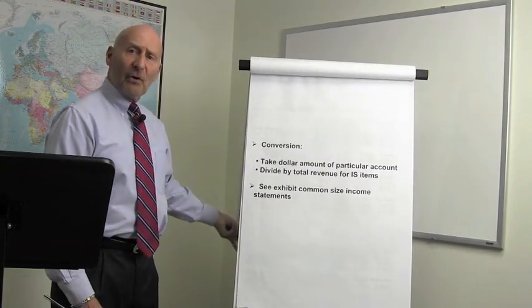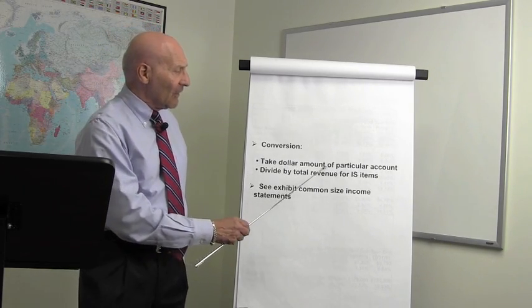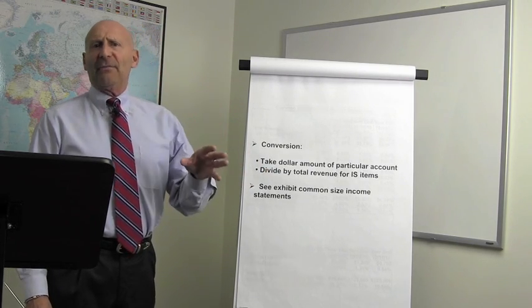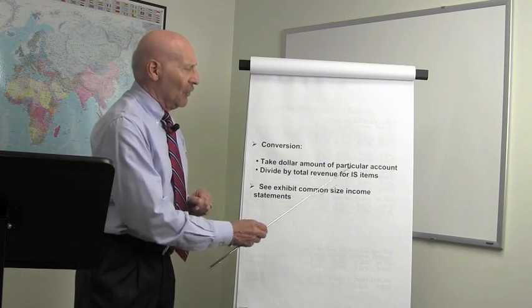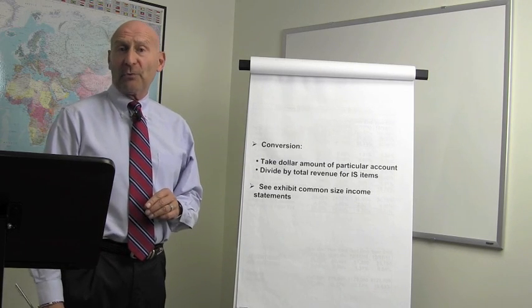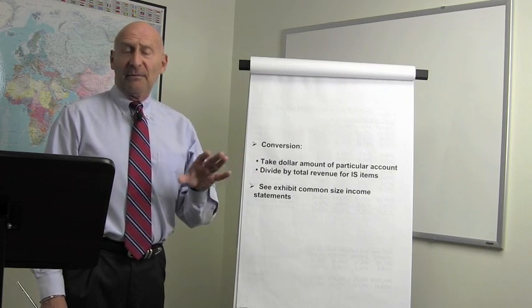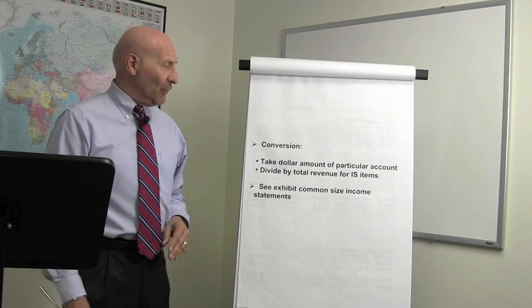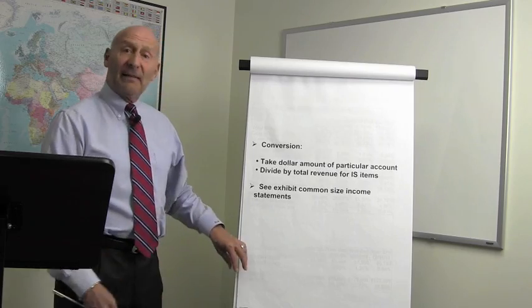Now, how do we convert the dollars to the percentages? Very simple. We take the dollar amount of the particular account that you are converting. That could be rent, advertising, office supplies, any of the accounts on the income statement, and divide that by the total revenue of that particular year. Now, the total revenue is what we also refer to as the 100% line. So if you're using a database spreadsheet program, you can set up formulas that will do this automatically. If you're doing it manually, you simply take the dollar amount of the particular account category and divide that by the total revenue.